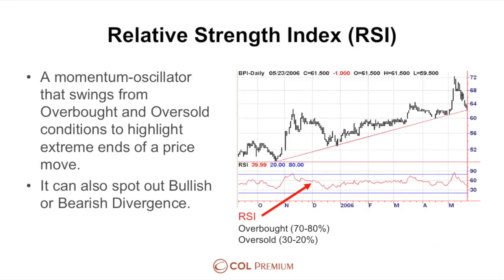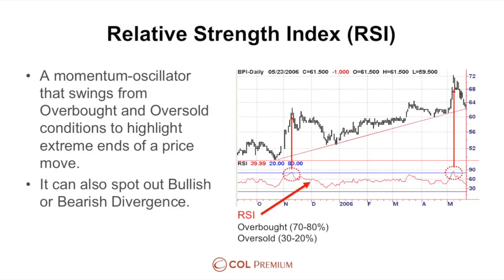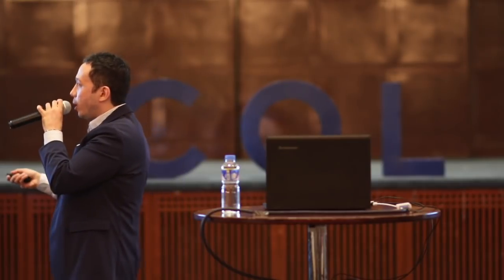In a 45-degree uptrend, when prices reach overbought conditions, that can be the starting point of a duration. An overbought signal can be the beginning of when duration starts to happen for 45-degree issues. But for small-cap issues hitting 60 degrees up — like MRC, PXP, or Tugs — these can stay in overbought levels. For big caps, overbought and oversold simply help you determine when duration can start.